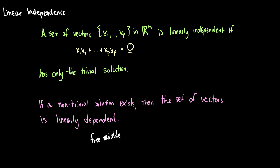Why is that? Because we can have a situation where 2*a1 plus 3*a2 plus 0*a3 equals zero, which means a3 is dependent on a1 and a2. We can have none of a3 and still get back to zero.